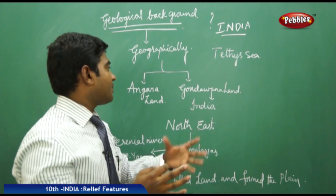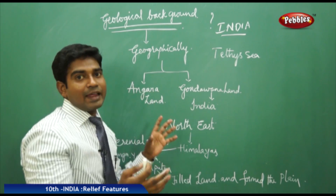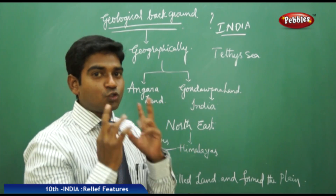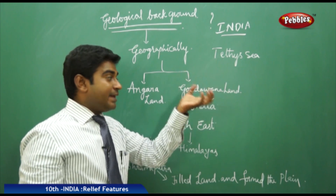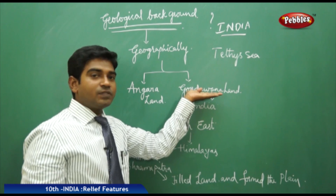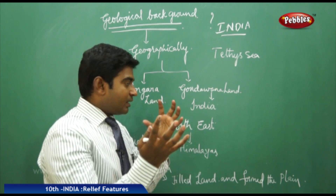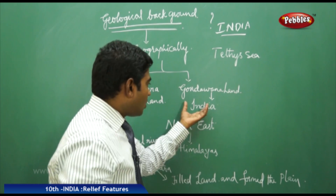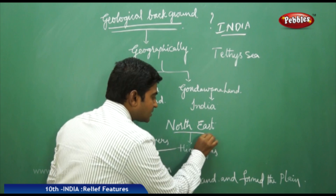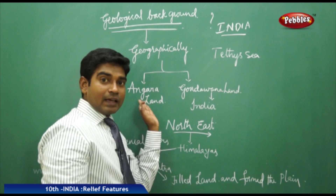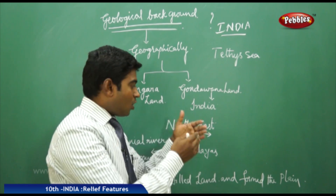There were collisions that happened in the landforms. The entire landmass of the world is divided into two major landforms: Angara Land and Gondwana Land. The Indian landmass is a part of Gondwana Land. In the process of its transformation, as the earth plates were rotating, Gondwana Land moved towards the northeastern part.